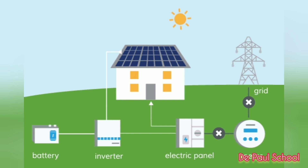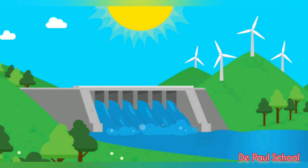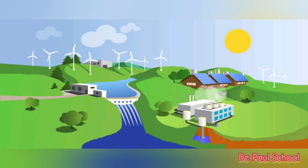Sunlight is trapped by solar panels. Another form of renewable energy is hydro energy — the energy generated by moving water. Wind energy, obtained by windmills, is also a renewable source. In windmills, wind energy is used to move turbines and produce electricity. Renewable sources of energy do not pollute the environment.